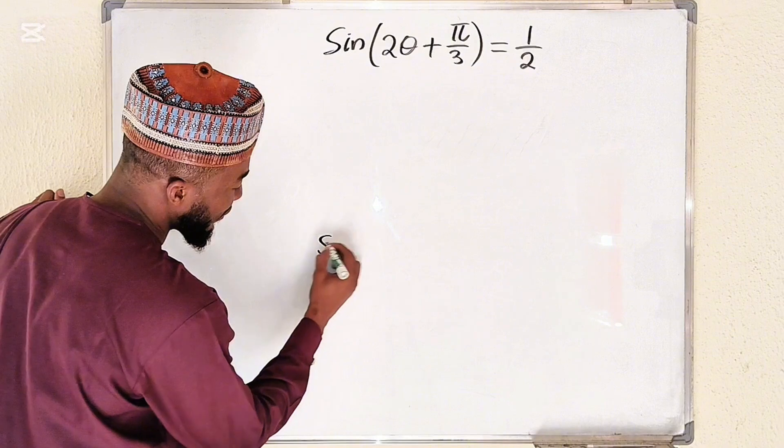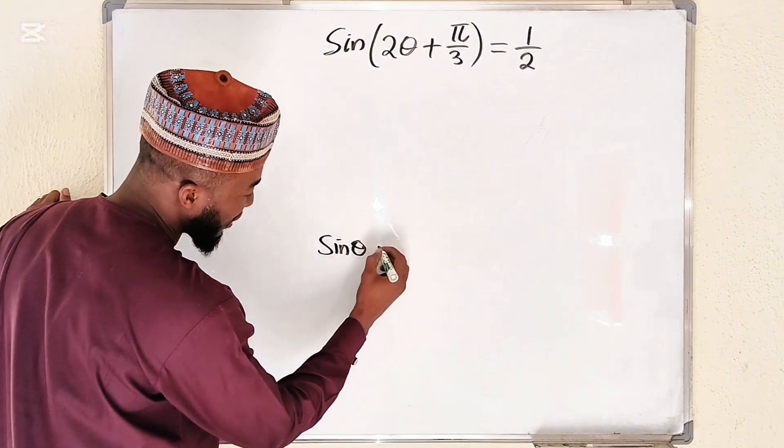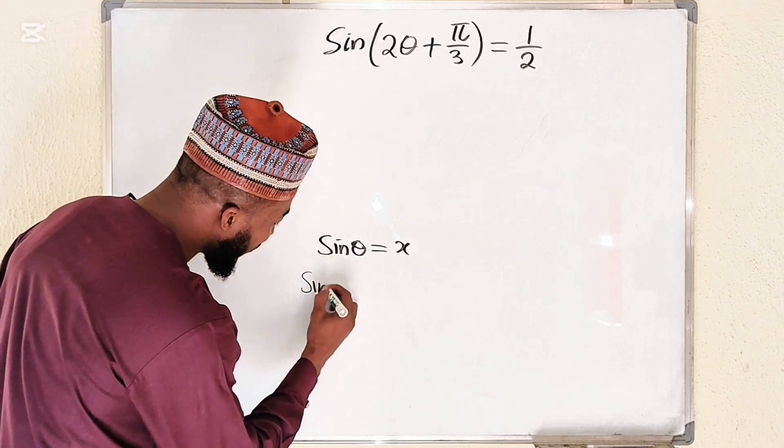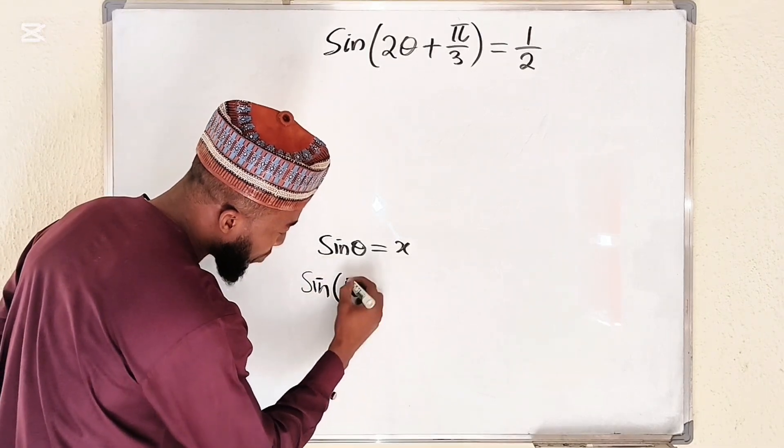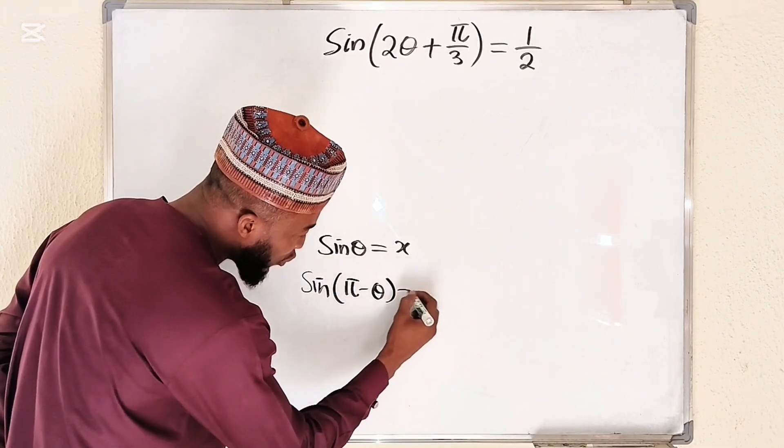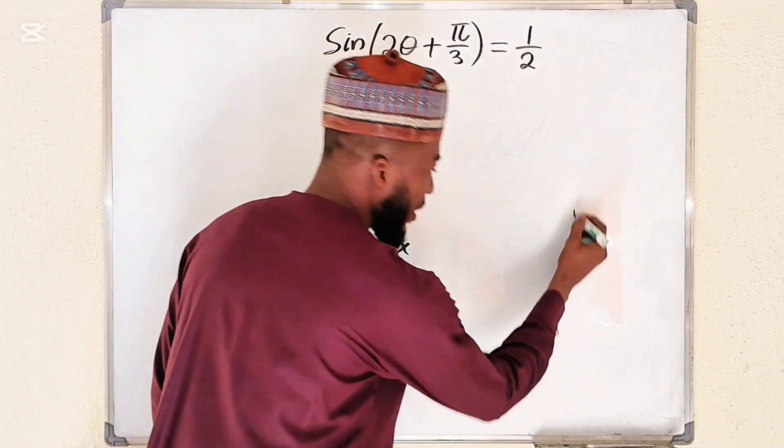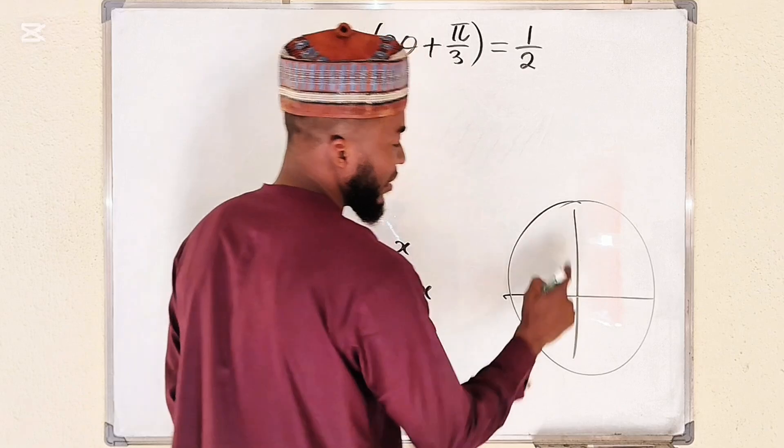One thing you should always remember is if you have sine of an angle theta equal to a certain value x, sine of pi minus that angle theta will also be equal to x.